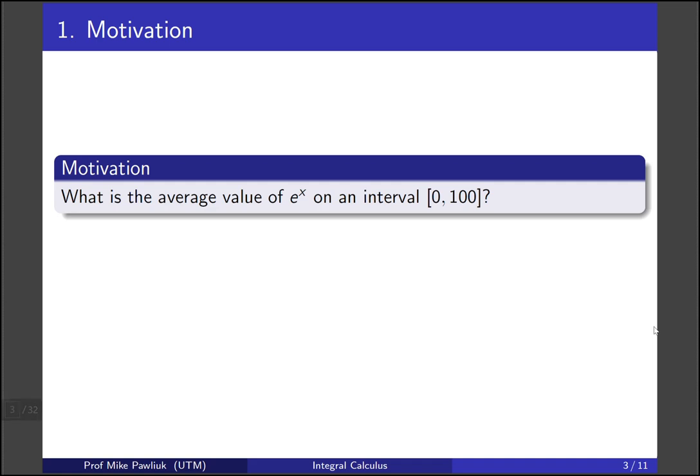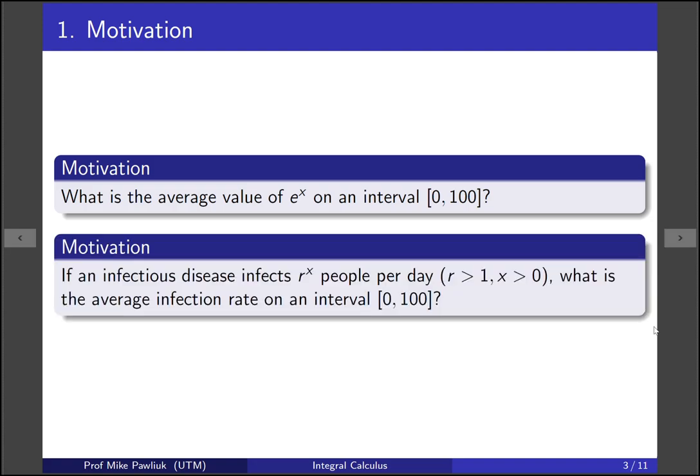Let's start with some motivation. The main example we're going to look at is what is the average value of e^x on an interval say 0 to 100. We're going to look at it on a bunch of different intervals but this is a question you can get your hands on and think about. Now this is a very abstract problem, but the real motivation is that we're going to be thinking about infectious diseases. So if an infectious disease infects r^x people per day, an exponential amount, what is the average infection rate on an interval 0 to 100? How can we use this to interpret things about exponential growth?